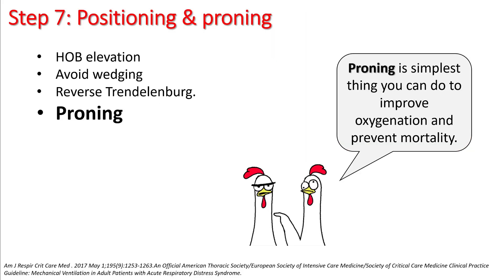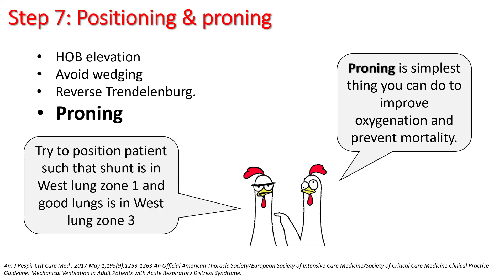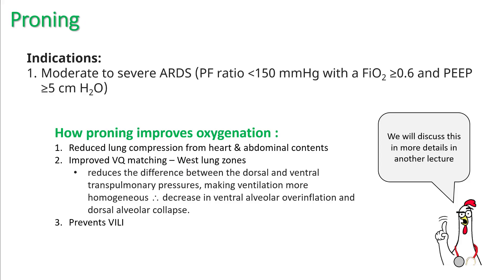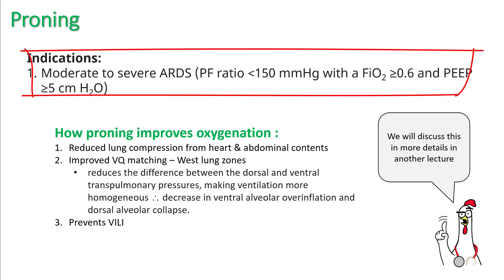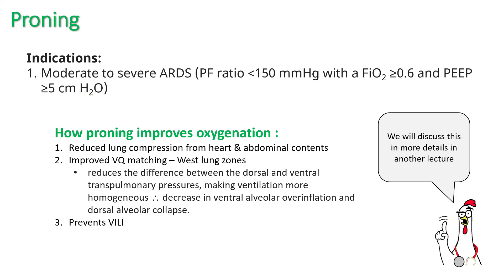Proning is the simplest thing you can do to improve oxygenation and prevent mortality. You can also do simple measures like head of bed elevation and avoid wedging of the patient to help VQ matching. Try to position patients such that the shunt is in West lung zone 1 and the good lung is in West lung zone 3. We'll discuss proning in more detail in another lecture.